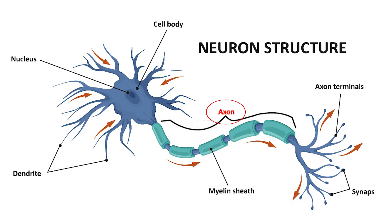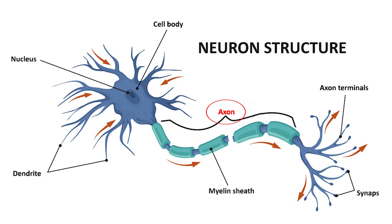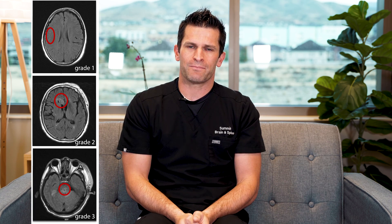Diffuse axonal injury is basically a description of the injury that occurs from shear forces in a bad head trauma. The more peripheral the injury, the less severe. As you get closer and closer to the center of the brain and the brain stem, the more serious and severe the diffuse axonal injury is. It is graded one, two, or three depending on how close to the brain stem the injury is.